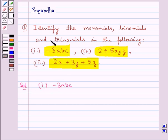Minus 3abc contains only one term which is minus 3abc of course and therefore we say that it is a monomial.